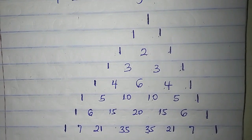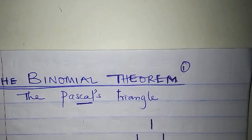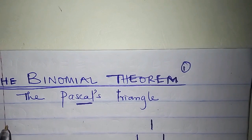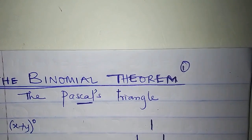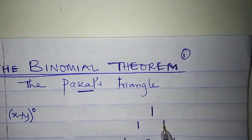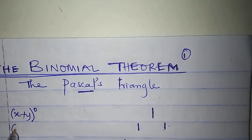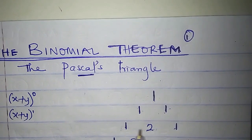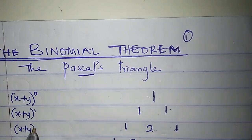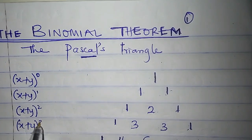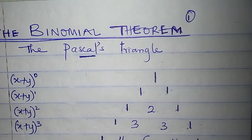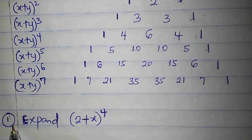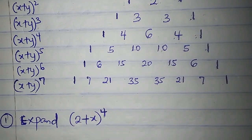So let's stop here. This is the Pascal's triangle. You can go on and on, but let's just stop here. This coefficient is for the expansion of the binomial x plus y raised to the power of 0. These coefficients are for x plus y raised to the power 1, this for x plus y raised to the power 2, x plus y raised to the power 3, and so on and so forth. My first question here is to expand 2 plus x to the power 4.